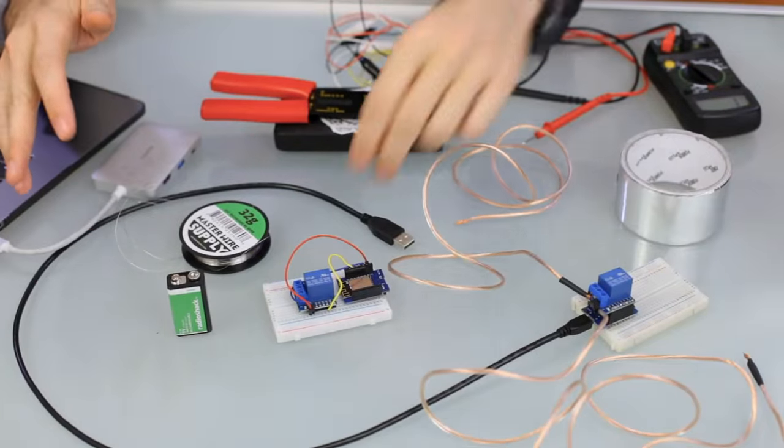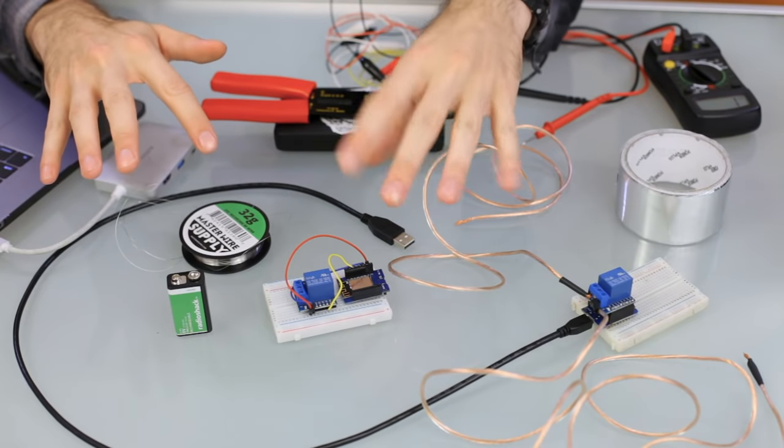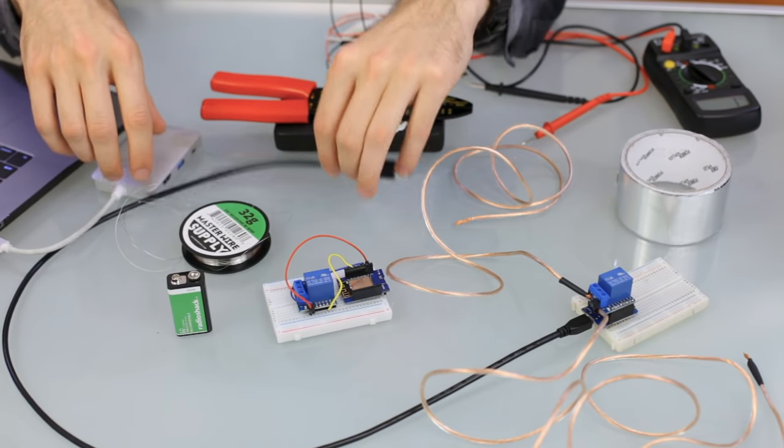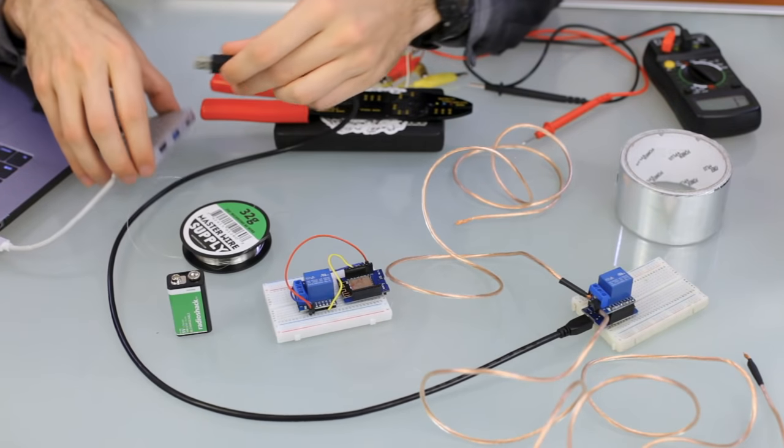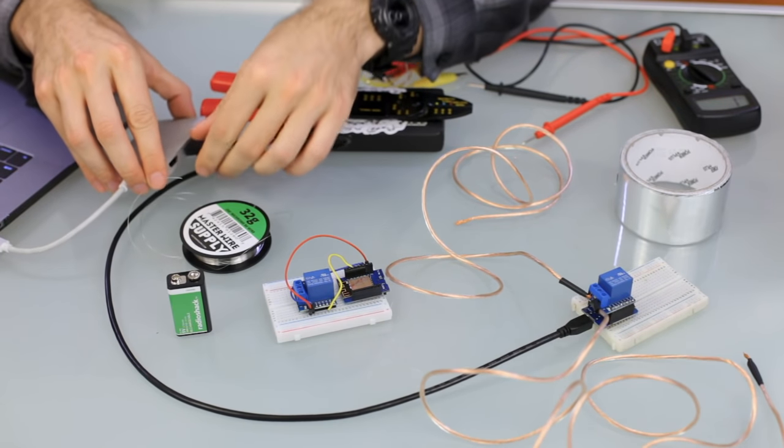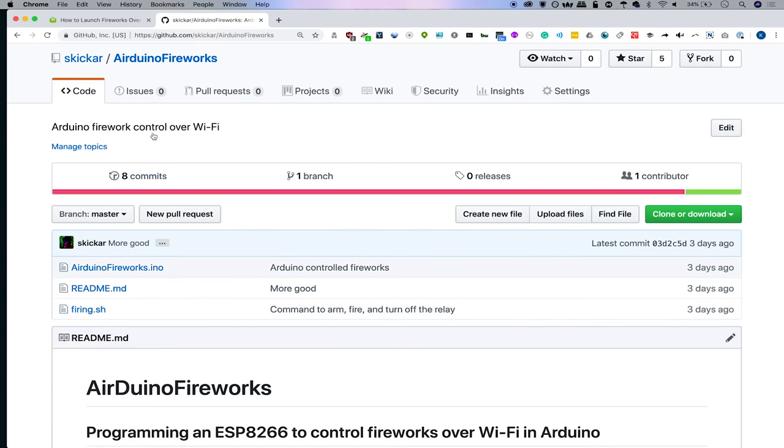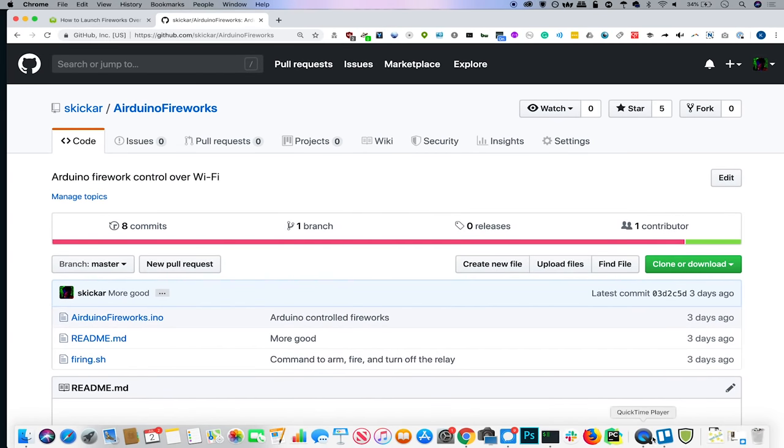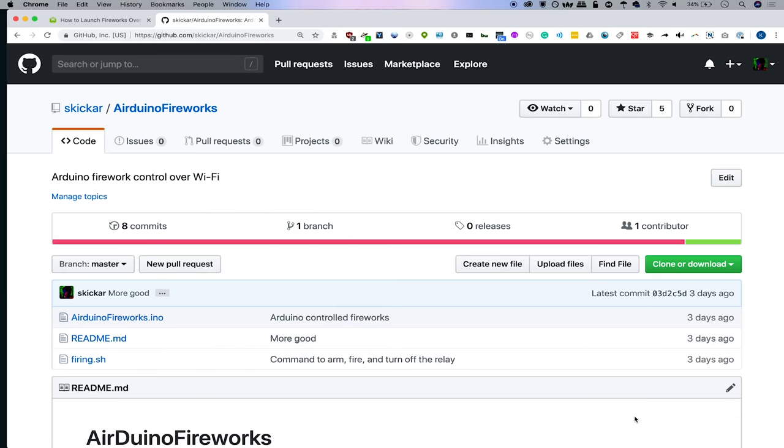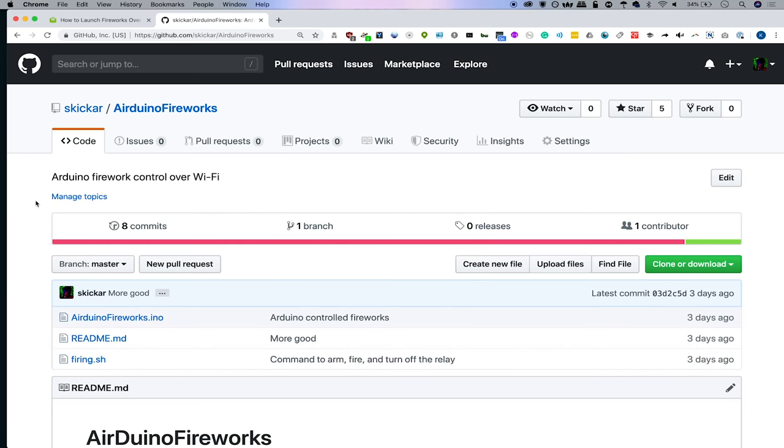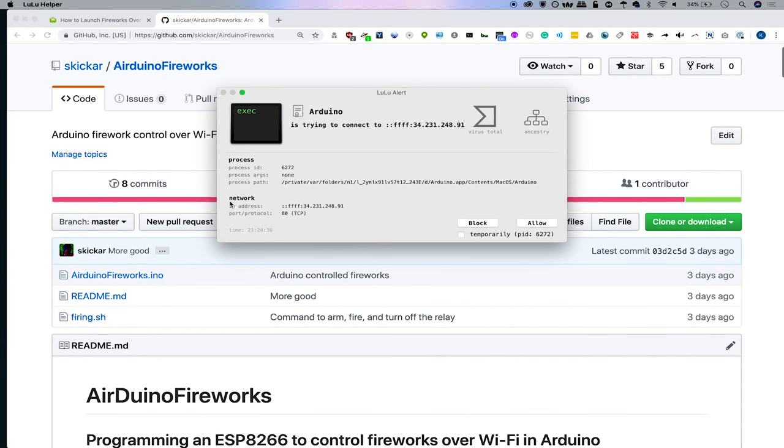First things, let's go ahead and connect the ESP and the relay and then plug it into our computer. We're going to jump into Arduino IDE so that we can upload the sketch that will allow us to control everything. So in Arduino, we can see that, I actually don't have it open yet.